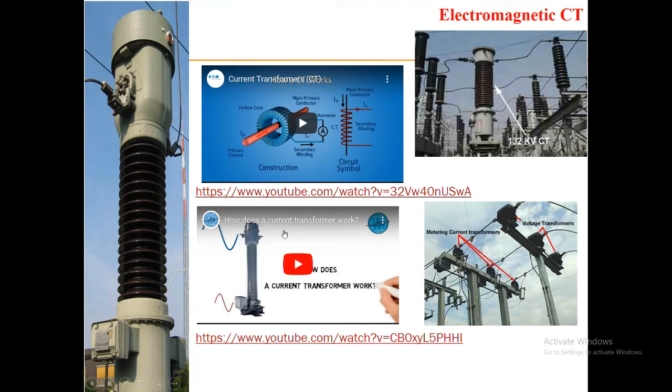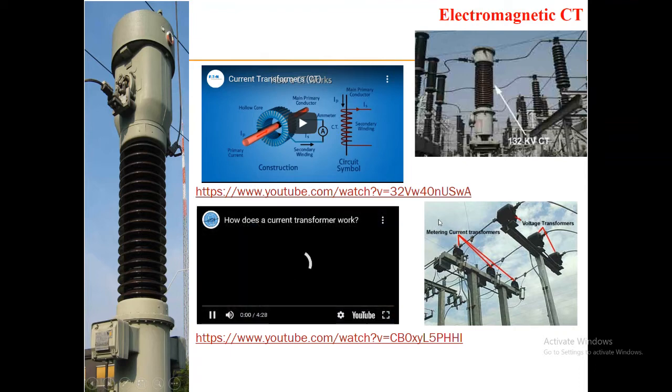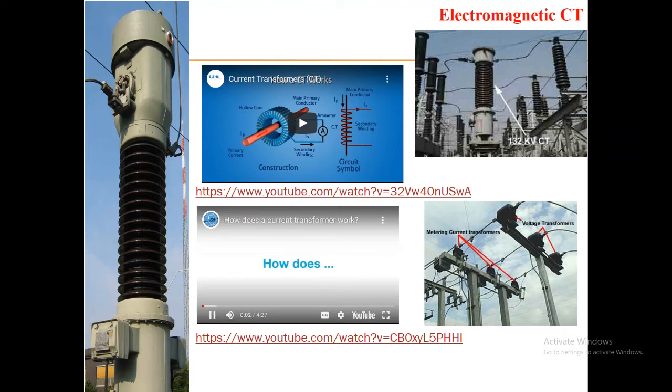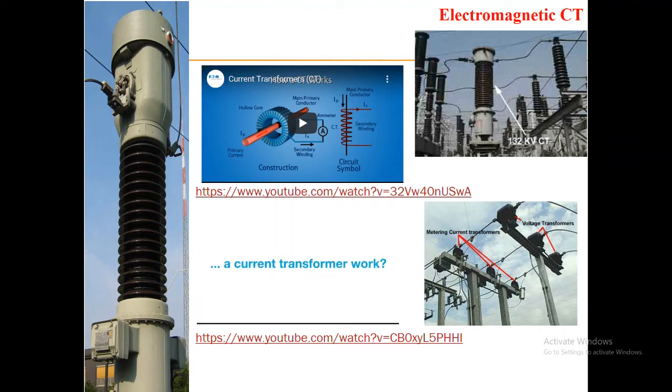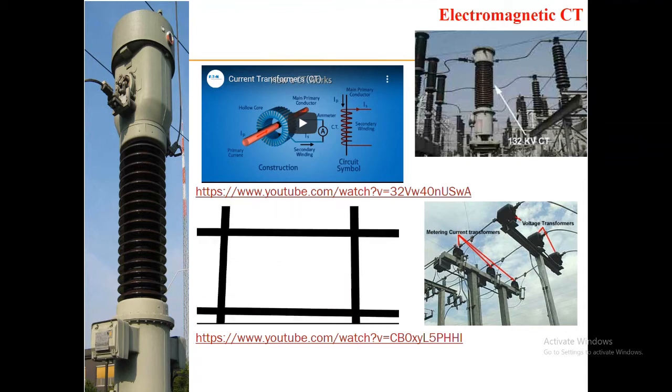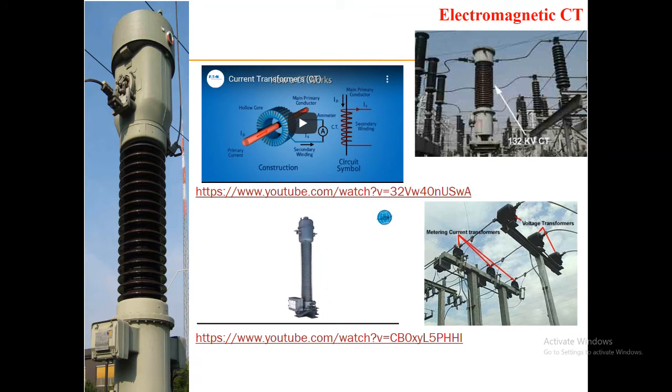Current transformers are used to transform standardized primary currents into standardized secondary currents. The AC currents converted this way are much smaller than the primary flowing currents and can be directly processed by the connected protection, control, and measuring systems. In this video, we look at the basic operating principle of an inductive current transformer. The basic principle is simple electromagnetic induction.